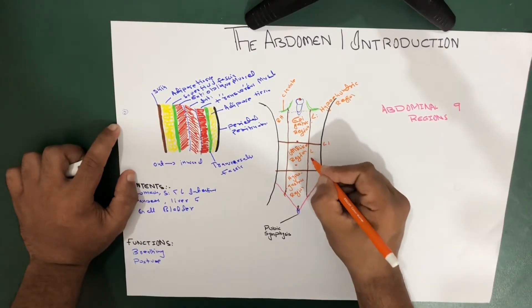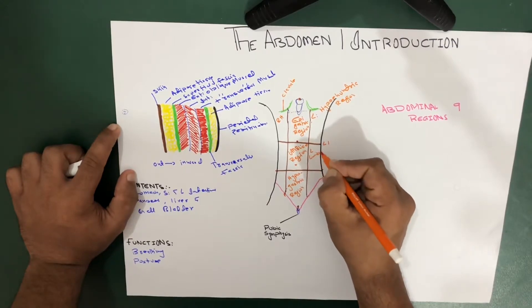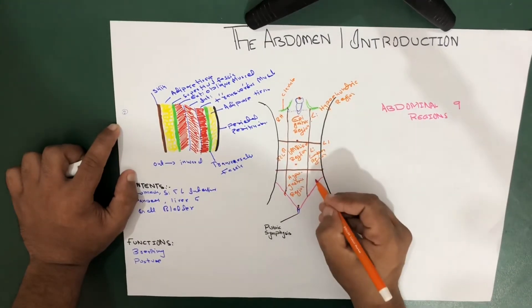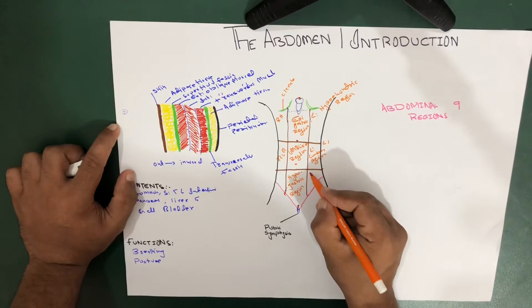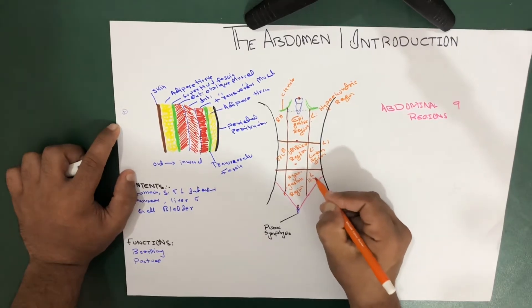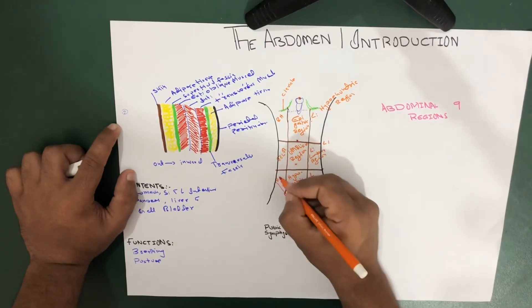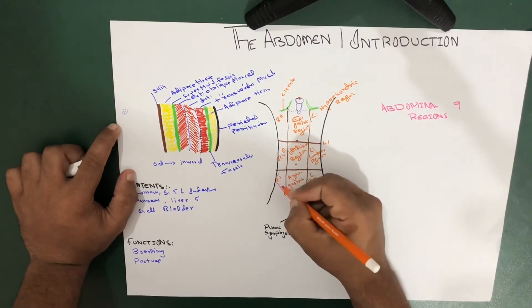As we go down, this is the left lumbar region, so this is right lumbar region, very simple. And we go down, we get the left iliac region, similarly, we get the right iliac region.